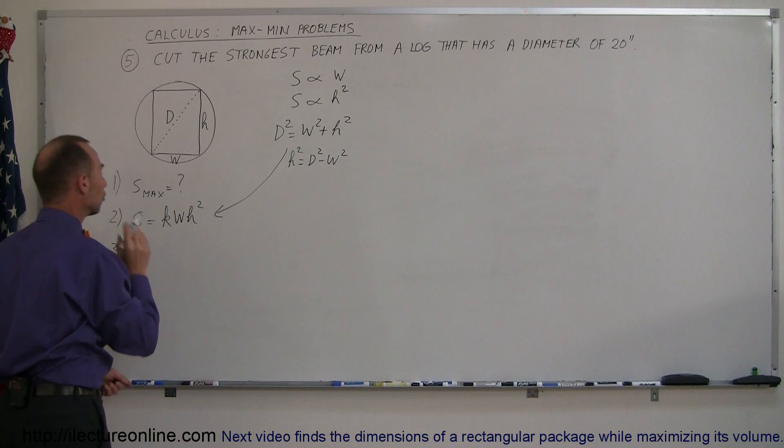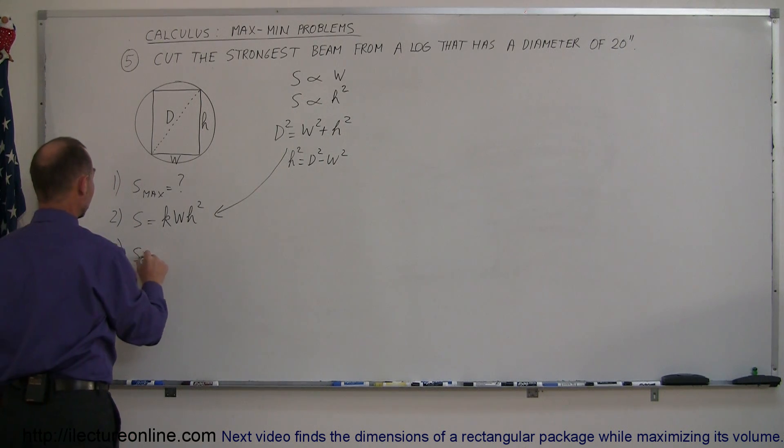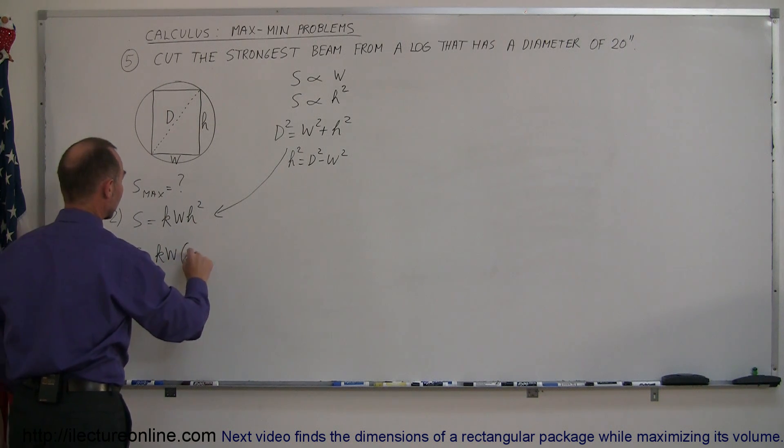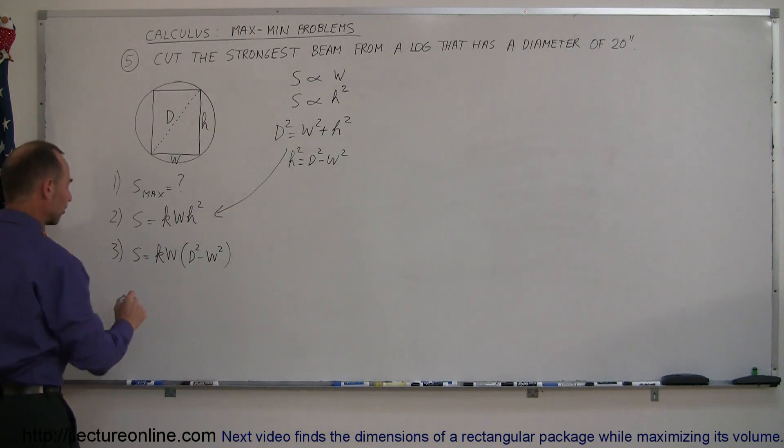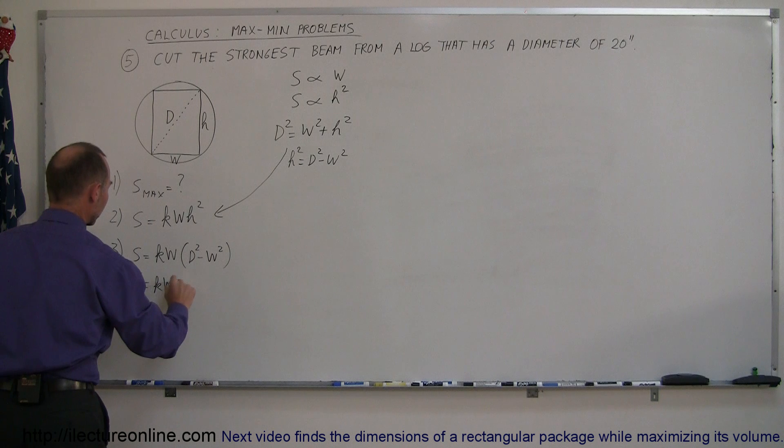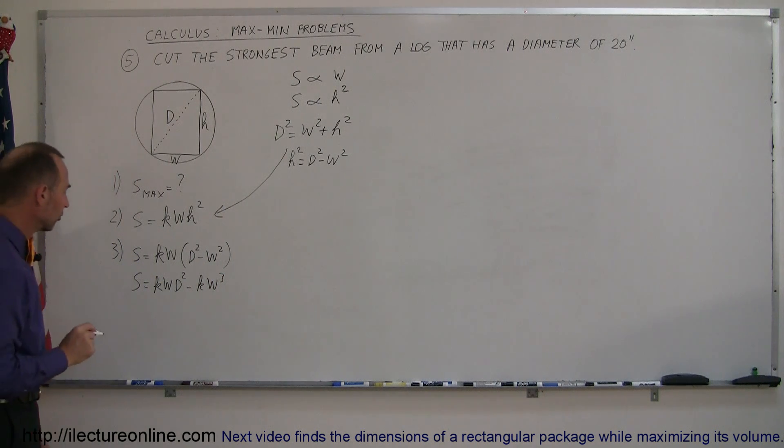So step number three: use a constraint to eliminate one of your variables. So in this case, S is equal to k times w times, instead of h², we write d² minus w². All right, simplifying this a little bit, we can say that S is therefore equal to kwd² minus kw³. All right, there's our equation. We're now ready to take the derivative.